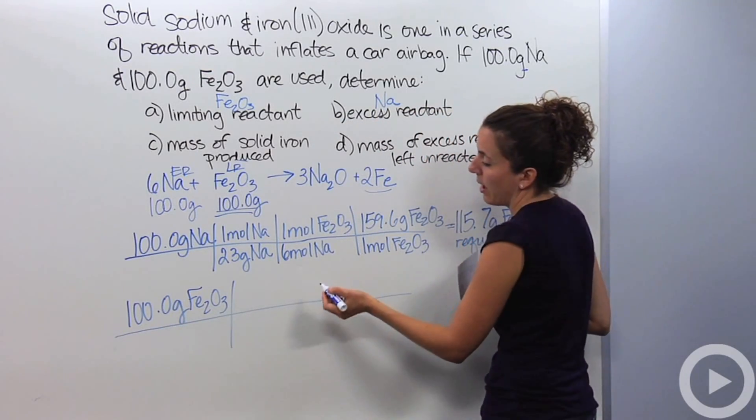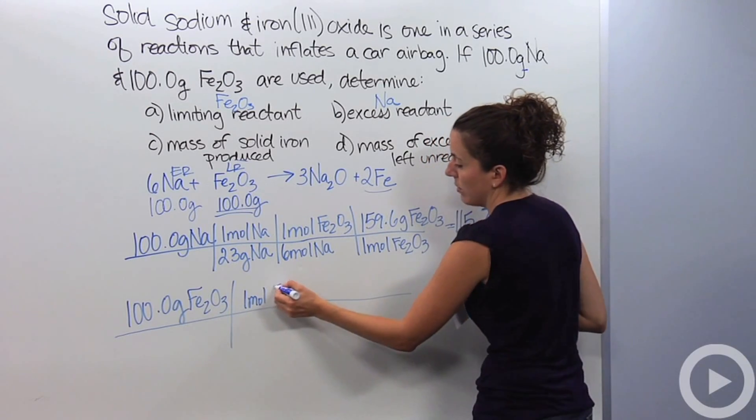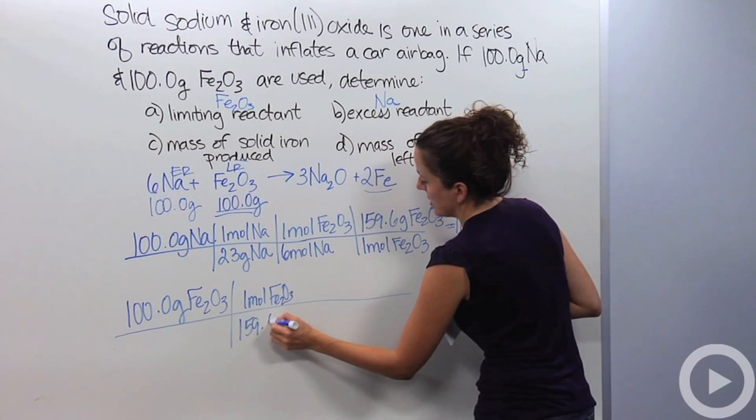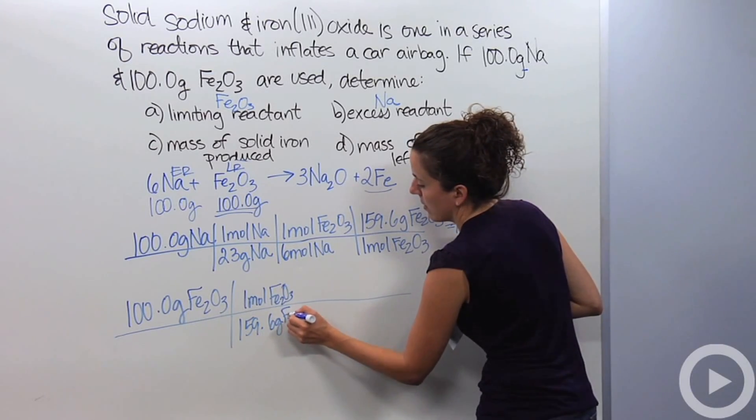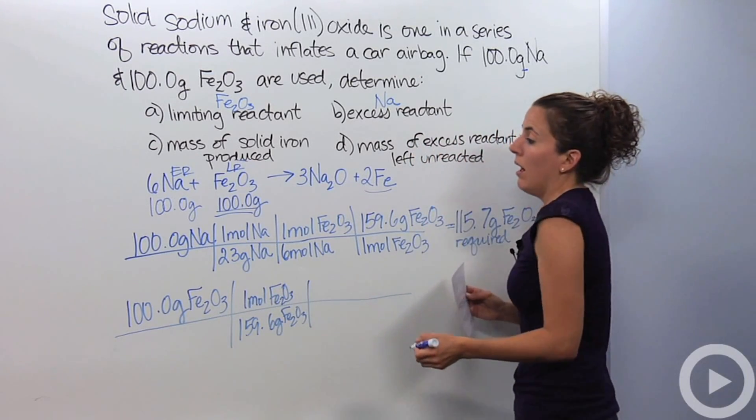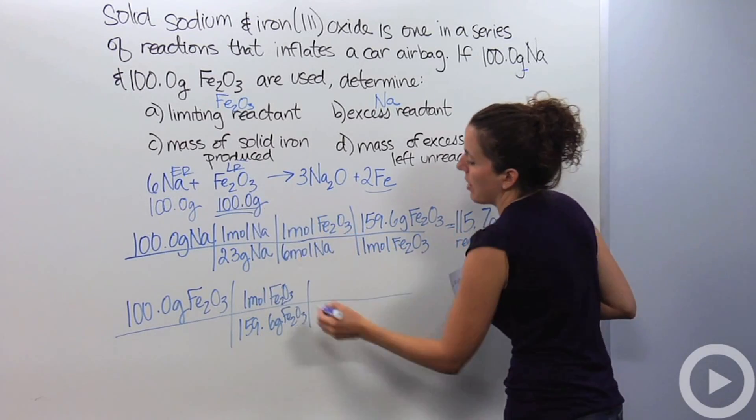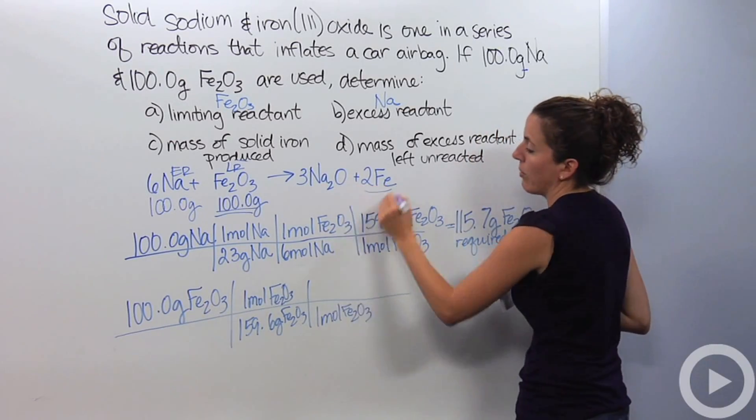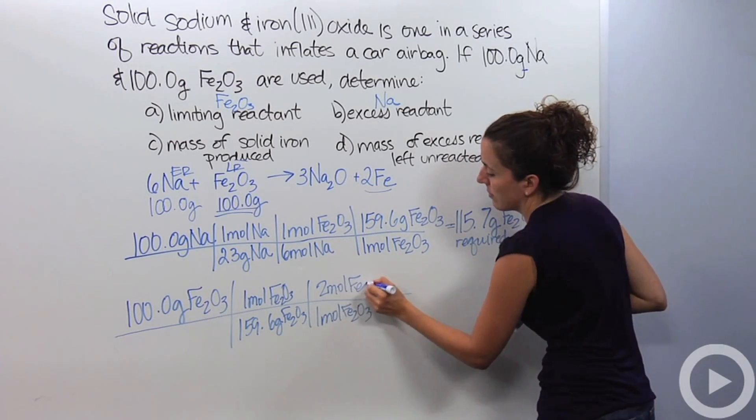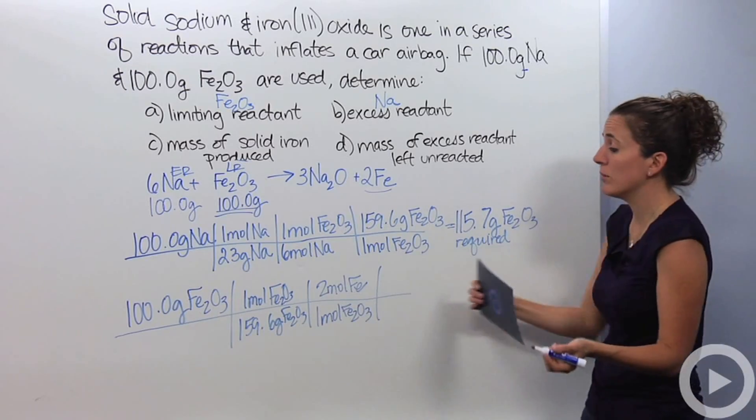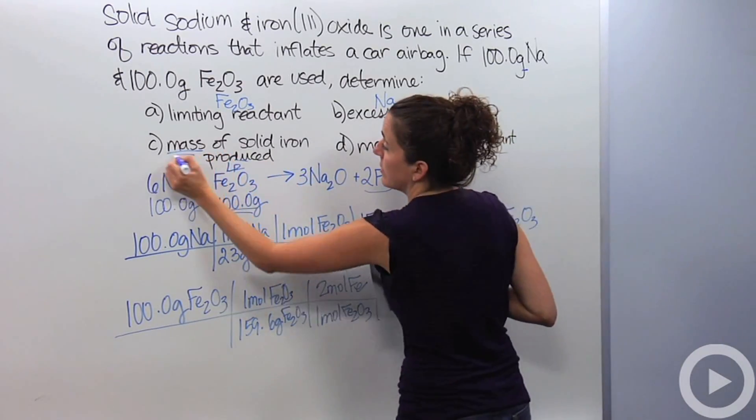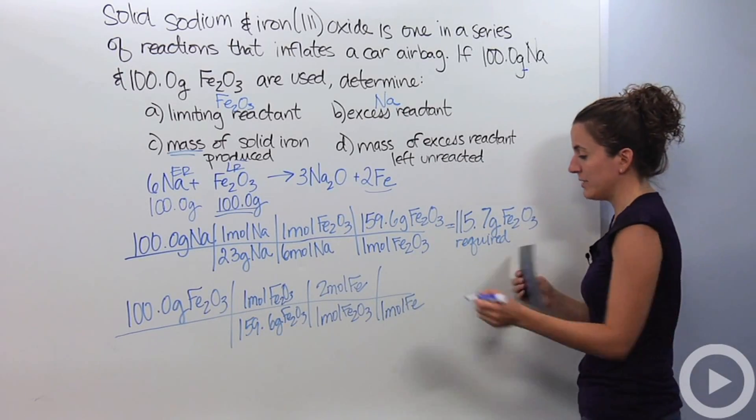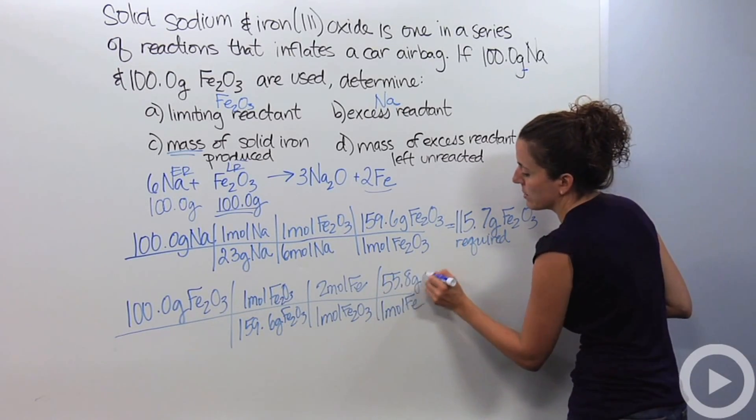I know the mass of Fe₂O₃, one mole, is, looking at a periodic table, 159.6 grams. I know that one mole of Fe₂O₃, I require two moles of iron. And looking at a periodic table, I'm looking for grams. I'm looking for the mass of solid iron produced. So, I'm going to make sure that it's in grams. So, one mole of Fe, looking at a periodic table, is 55.8 grams of Fe.